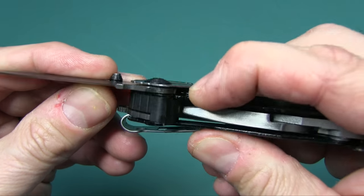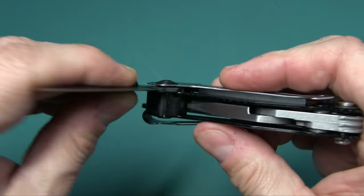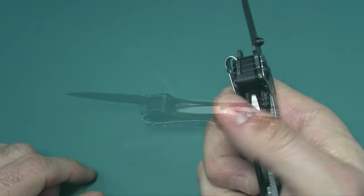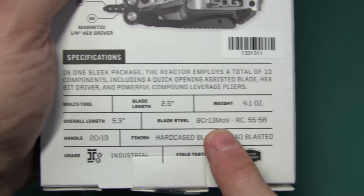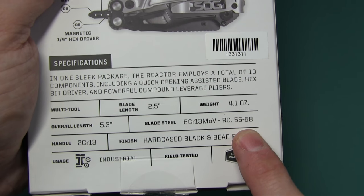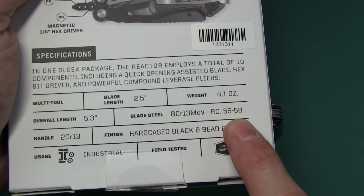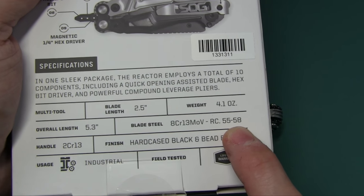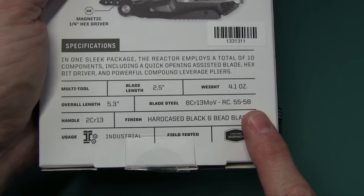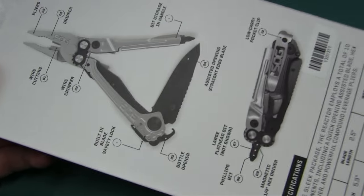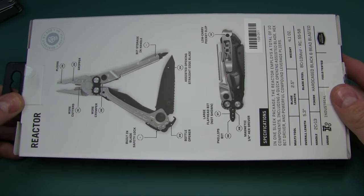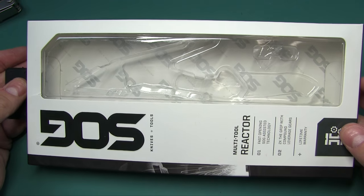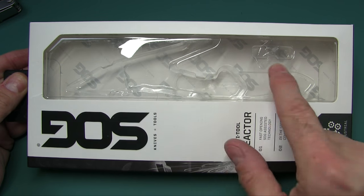You can see it has a liner lock in there. The blade is, according to the box, 8CR13MOV with a Rockwell hardness of somewhere between 55 and 58. Thank you for being very specific there. I didn't show you the box. There is the back, there is the front. If your box comes like this, then don't buy it because someone took the knife out of it.